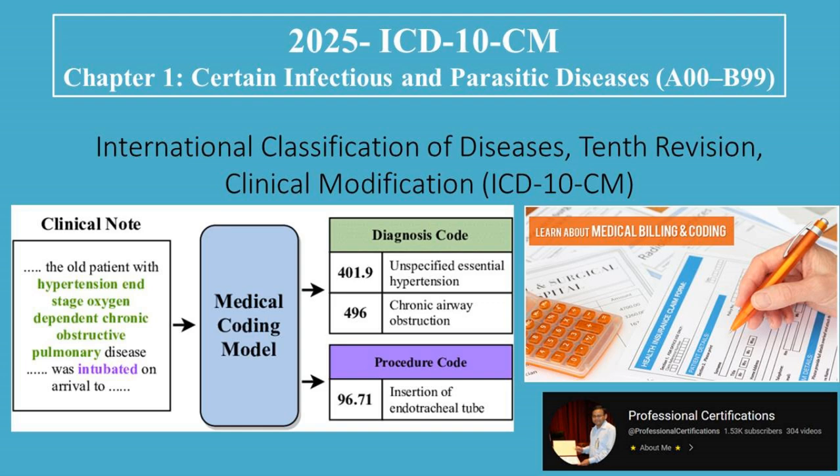Welcome to Professional Certifications Channel. In this video, we're diving into Chapter 1 of ICD-10-CM, which covers certain infectious and parasitic diseases, coded from A00 to B99. This chapter is critical for medical coders, especially those working in infectious disease clinics, emergency departments, or global health programs.